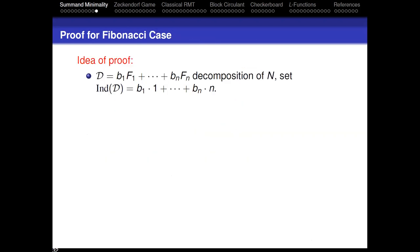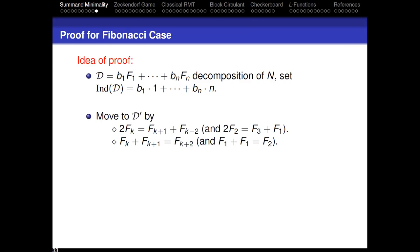I want to show a monovariant that you can use for the Fibonacci numbers that will quickly give us that nothing can beat the Zeckendorf decomposition. Suppose we have a decomposition with b₁ copies of F₁, all the way up to bₙ copies of Fₙ. Define the index of a decomposition to be the weighted sum b₁·1 plus ... plus bₙ·n. The Fibonacci recurrence gives us two different types of moves: we can split a Fibonacci number — if we had 5 plus 5, we could write that as 8 plus 2 — replacing two copies of Fₖ with one Fₖ₊₁ and one Fₖ₋₂. Or we can combine two adjacent Fibonacci numbers: Fₖ plus Fₖ₊₁ is Fₖ₊₂.